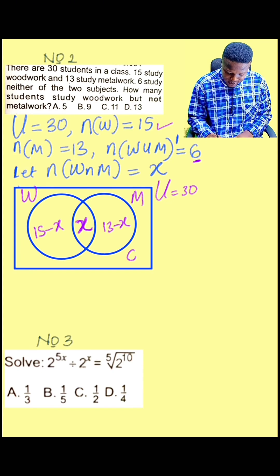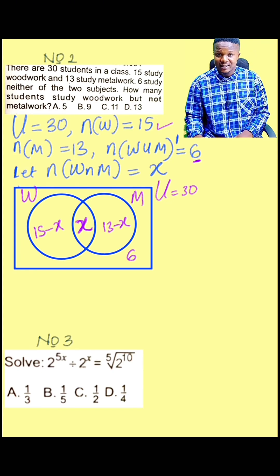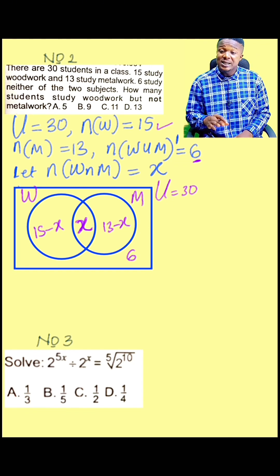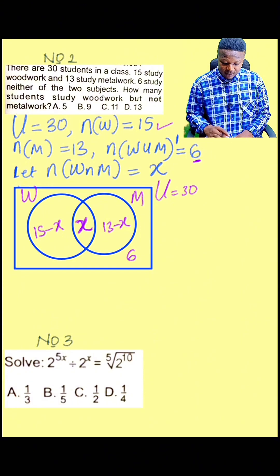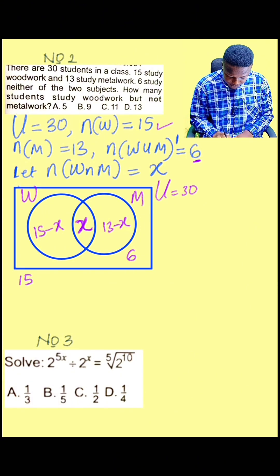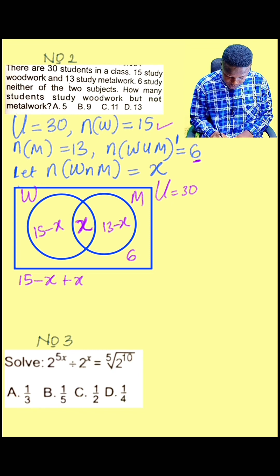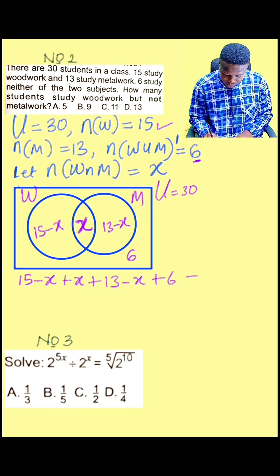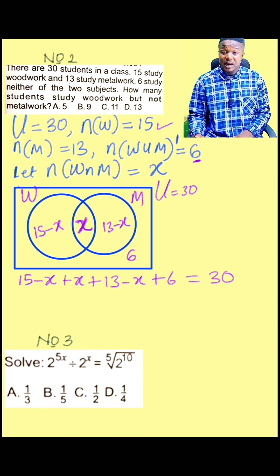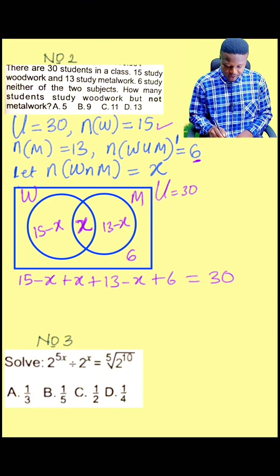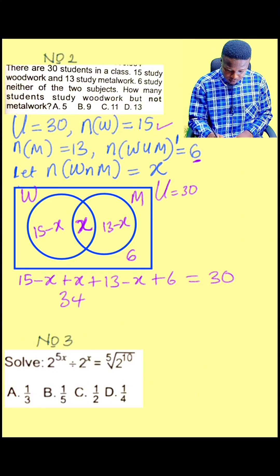So they will belong anywhere inside the rectangle but outside the circle. So the sum of everything inside this rectangle will give us the universal set. So you are not wrong if you write that 15 minus X plus X plus 13 minus X plus 6 equals 30. 15 plus 13 is 28, 28 plus 6 is 34.